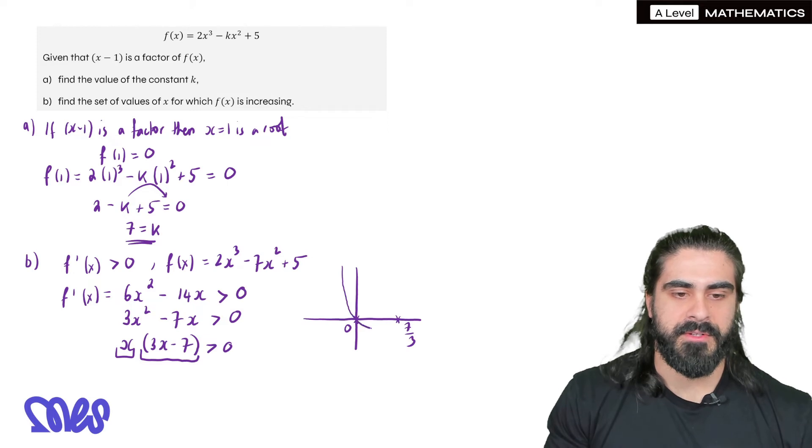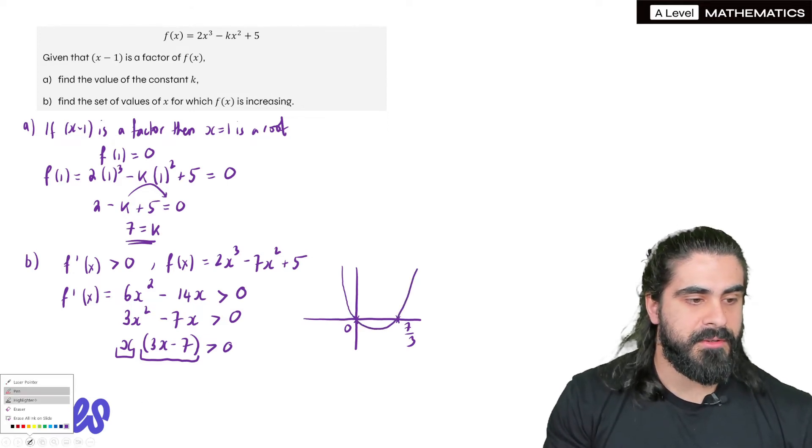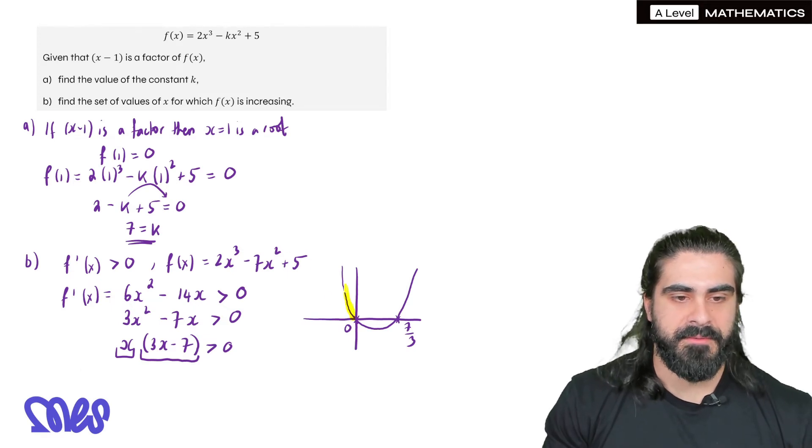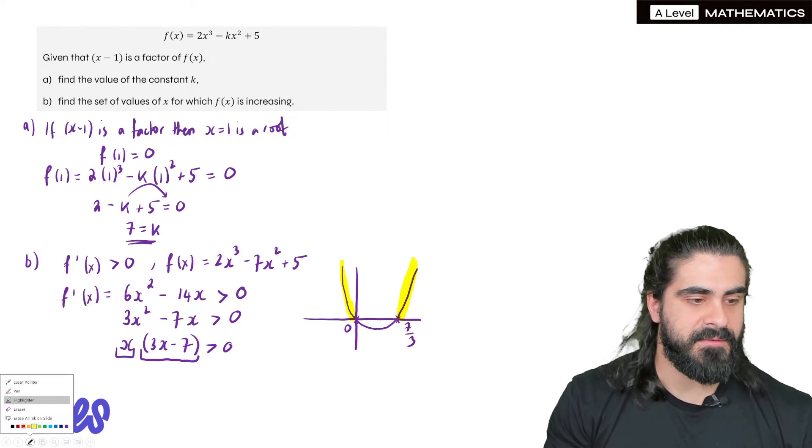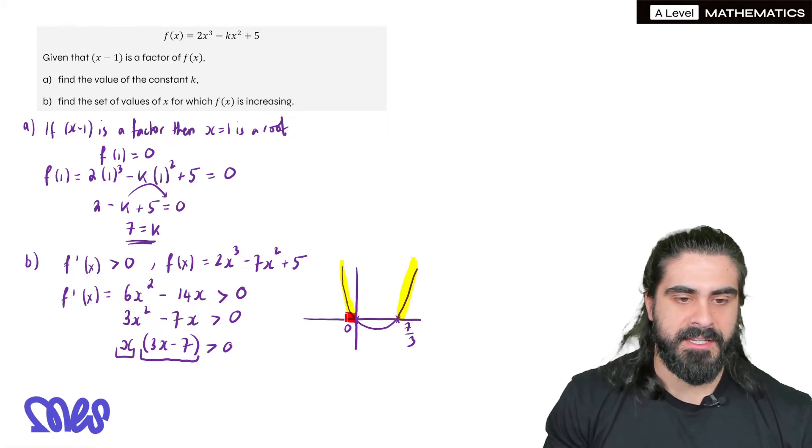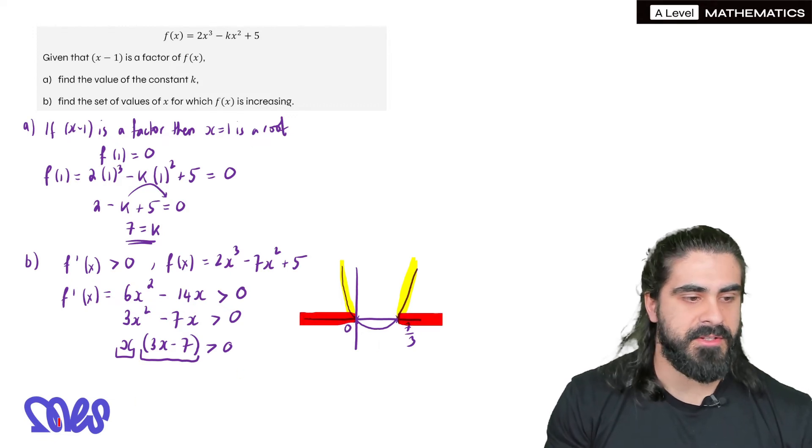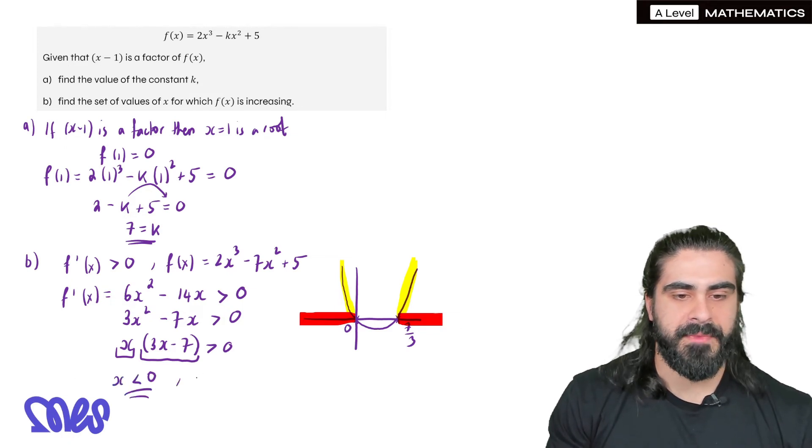So we have 0 or 7/3. So a graph looks something like this. And now we want to know when is the portion of the graph bigger than 0. So what x values define these highlights. Well the x values that define those highlights are any x values less than 0 or any x values bigger than 7/3. So our solution is x < 0 or x > 7/3.